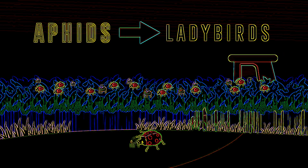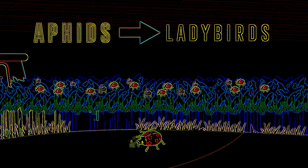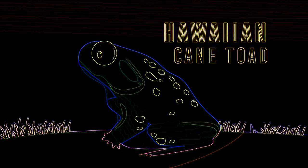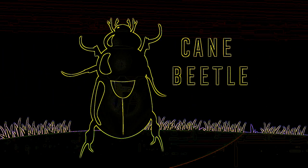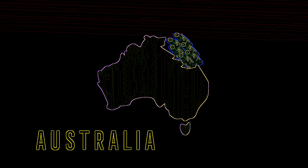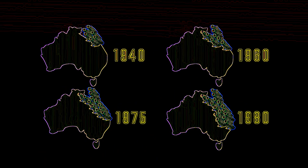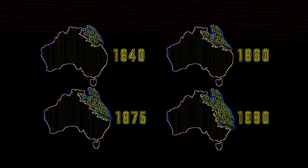Sometimes this method of control works well. However, the introduction of a new species to an environment can have unexpected effects. One example is the Hawaiian cane toad, introduced in Australia to control the population of the cane beetle, a pest that damaged sugarcane crops. However, the cane toad had little effect on the cane beetle population. Instead, cane toads reproduced rapidly and spread across Australia as they had no natural predators. It's now considered a pest species itself and has been blamed for the extinction of some endemic species.